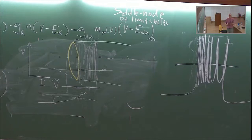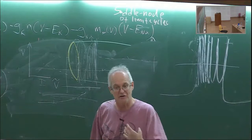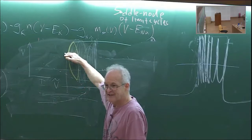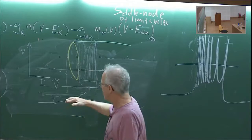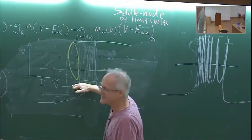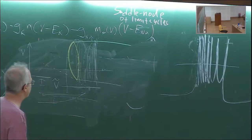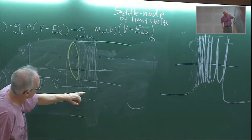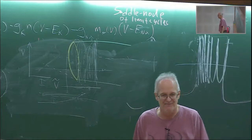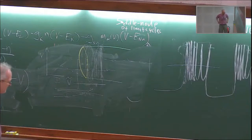I can't remember when the paper was written, but the transition here involves things called Smale horseshoes and it's very complicated dynamical systems. There are theorems — the paper is 50 or 60 pages. I'm not going to read it. So there is the square wave burster.